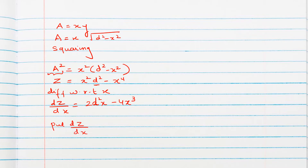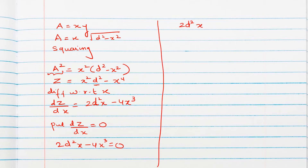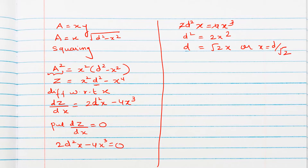Setting dz/dx = 0: 2d²x − 4x³ = 0, so 2d²x = 4x³. Dividing both sides by 2x gives d² = 2x², so x = d/√2. Now we check the second order derivative d²z/dx² to confirm maxima.